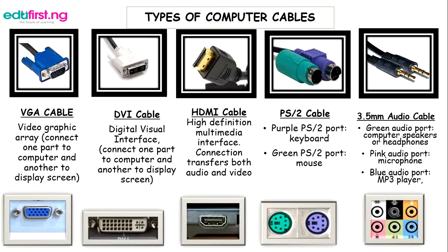Types of computer cables — the pictures you are seeing here show different types: you have the VGA, the DVI, the HDMI, the PS2, and the 3.5 / 2.5 millimeter audio cable. The VGA cable is called Video Graphics Array; it connects a computer to a display screen.